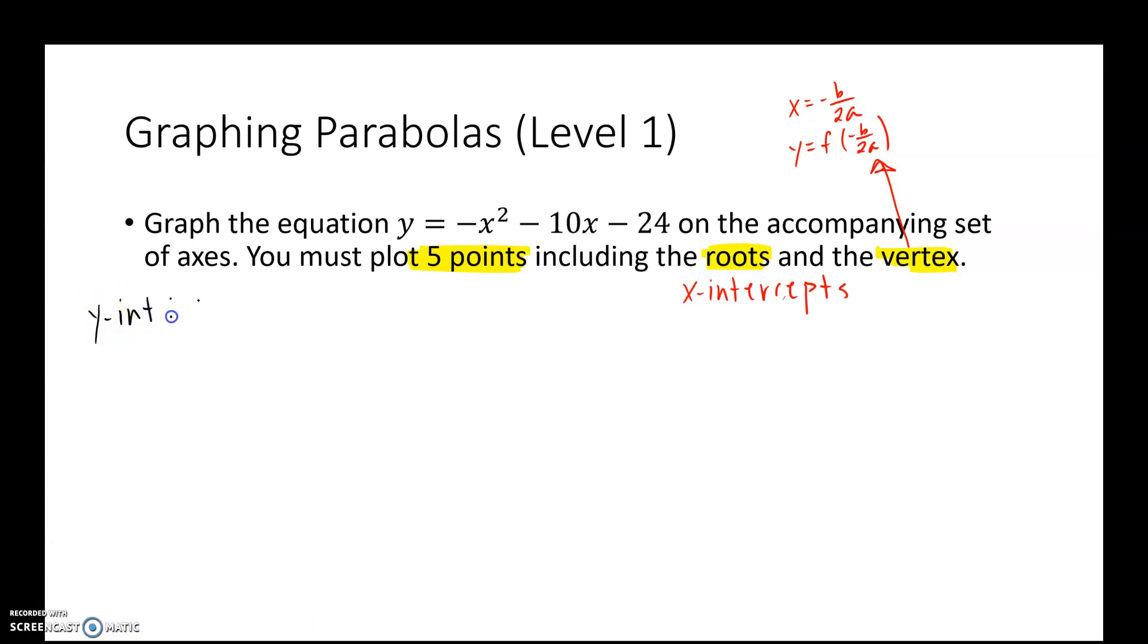Y-intercept, when my function's in standard form, the y-intercept is just 0, c. So my y-intercept would be 0, negative 24. Maybe I should start there. Let's write the values. So a equals negative 1. That's the coefficient to the squared term. B equals negative 10. That's the coefficient to the x. C equals negative 24. That's my constant term. That's the one that's alone.